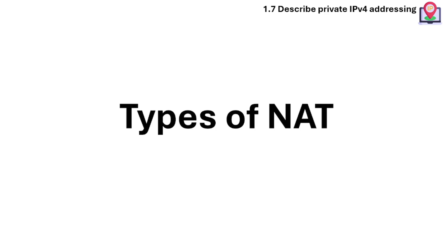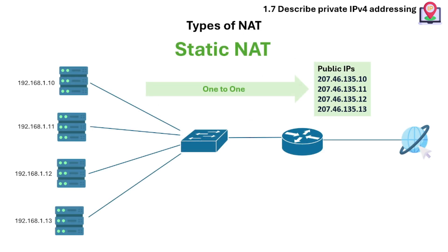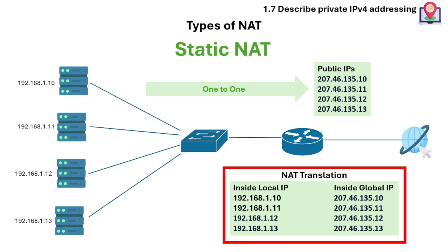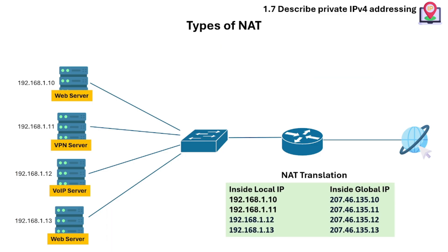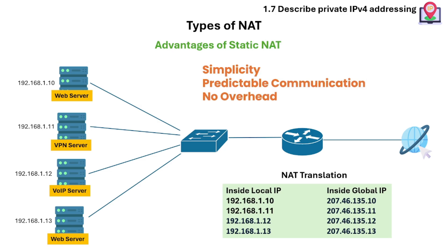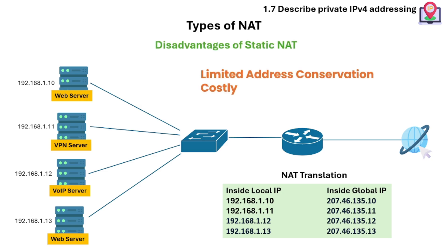There are different types of NAT. Static NAT is a one-to-one mapping of private IP to public IP. A unique public IP address from the external network is mapped to every private IP address from the internal network. The mapping stays fixed, since each communication between internal devices and external networks maintains identical public IP addresses. Static NAT is mostly used for servers that need to be accessed from the internet. Advantages include simplicity, predictable communication, and no overhead. The disadvantage is limited address conservation, as each internal IP requires its own individual public IP address, making it costly.